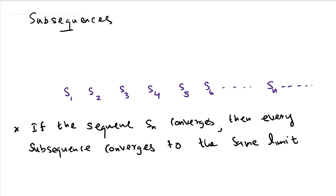Hello everyone and welcome. In this video I am going to prove the theorem: if a sequence S_n is convergent, then every subsequence of that sequence will converge to the same limit. Our main goal here is to prove the Bolzano-Weierstrass theorem, which I will do in the next video. But for that we will lay out our groundwork in this video.